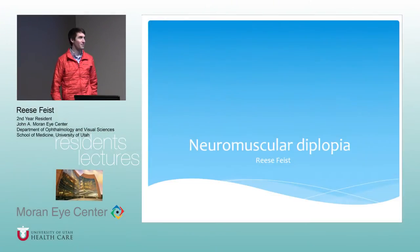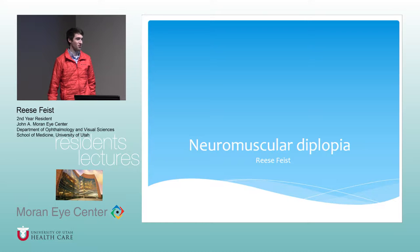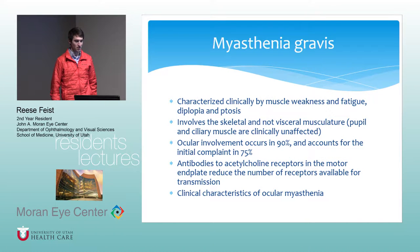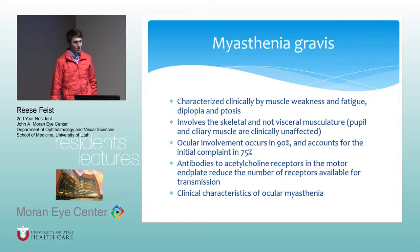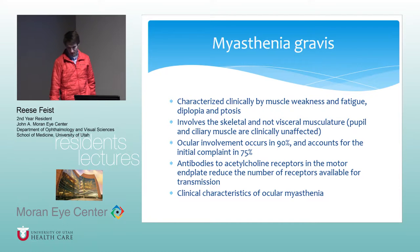So I didn't finish my title, but it covers neuromuscular causes — motor end plate and other restrictive processes. One of the top ones we think of is myasthenia gravis, characterized clinically by muscle weakness and fatigue, with common ocular complaints of diplopia and ptosis. This condition classically involves skeletal and not visceral musculature, so the pupil and ciliary muscles should be unaffected. Ocular involvement is common and can be the initial complaint. There are antibodies to the acetylcholine receptors at the motor end plate that reduce the number of receptors available for transmission of the motor signal.